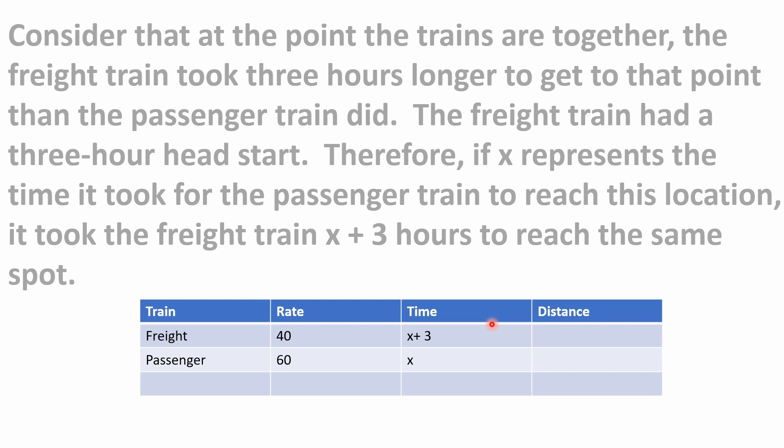We don't know how long it took either train to reach the overtaking point yet. What we can do is set a variable: let x represent the time it took for the passenger train to reach the location where it overtakes the freight train.